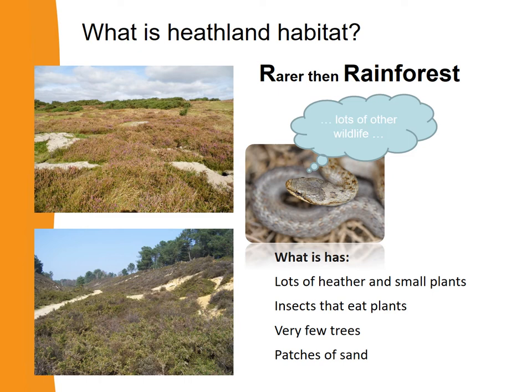What else can we see in those pictures? Well, we can see that there aren't lots and lots of trees. In the bottom picture there are some trees on the edge, but mostly there aren't lots of trees. That means there's not much shade, which means the ground is probably warmer.